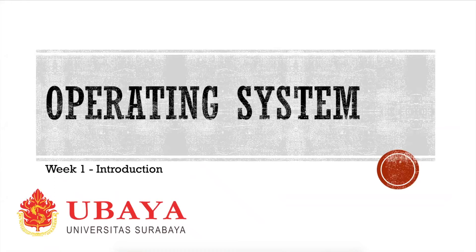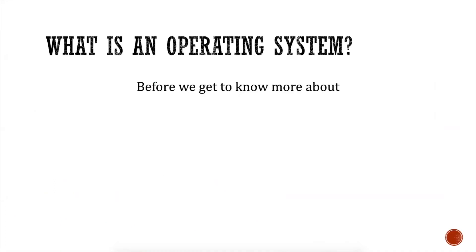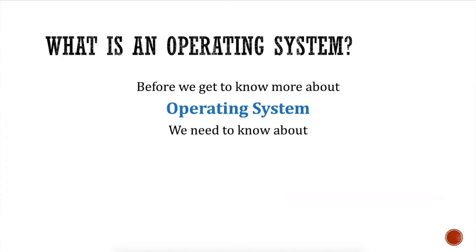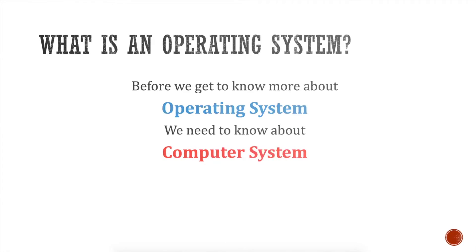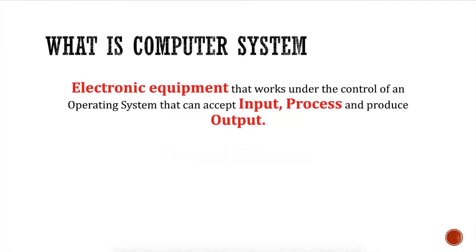Before we get to know more about the operating system, we need to know about the computer system. The computer system is an electronic equipment that works under the control of an operating system that can accept input, process, and produce output.